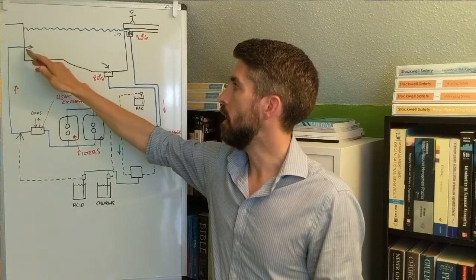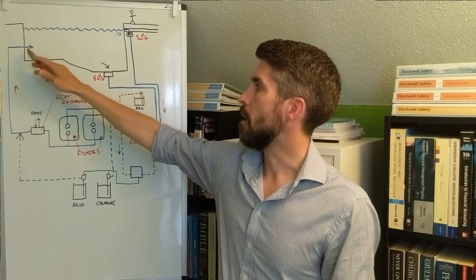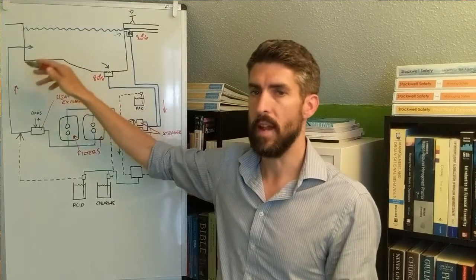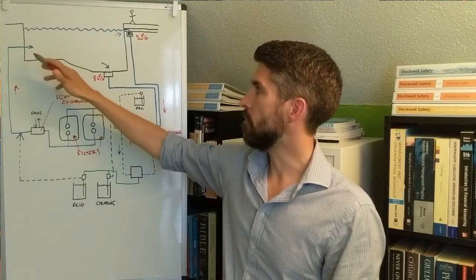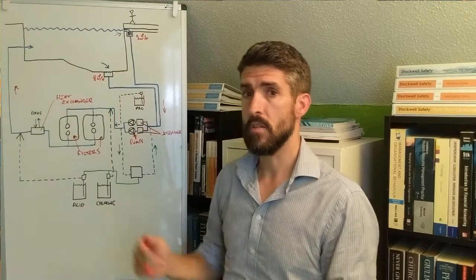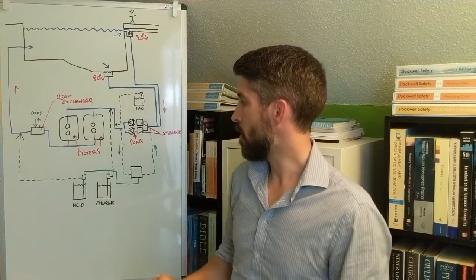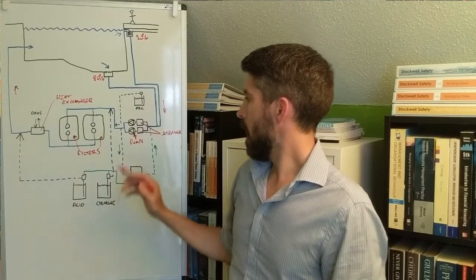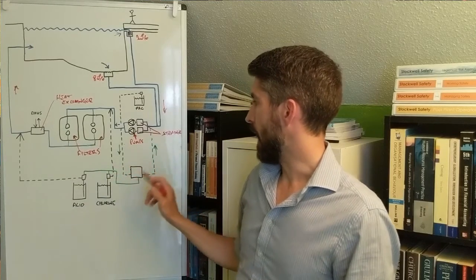What happens is the water then goes back and comes in at the inlets. On this particular example, I've included the inlets down at the shallow end, but depending on the pool design, your inlets can be distributed throughout the pool.